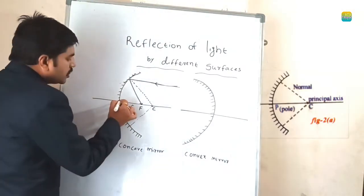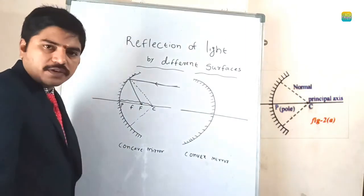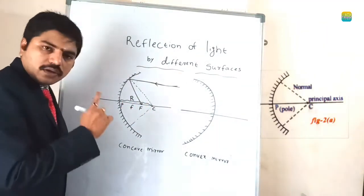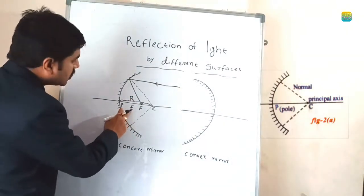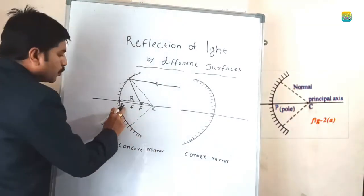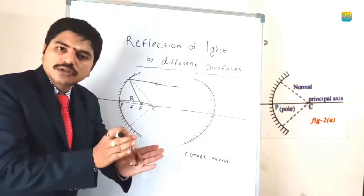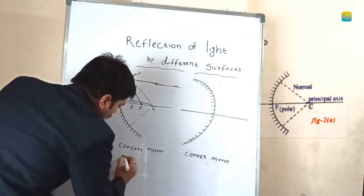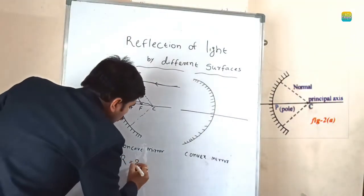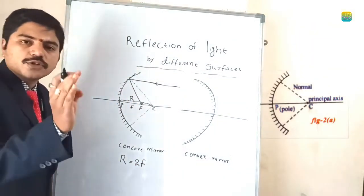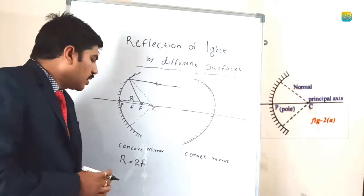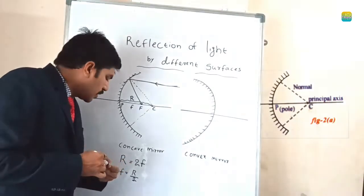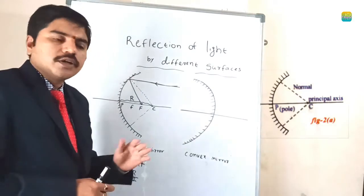The distance between the pole and the centre of curvature is said to be the radius of curvature, R. So R is the radius of curvature, small f is the focal length, capital F is the focal point or focus, and P is the pole. There is one formula: R equals 2 times the focal length, that is R = 2f, or otherwise f = R/2.